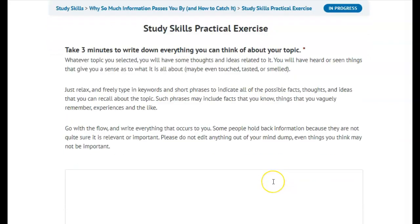So here's a practical exercise for you. Take three minutes to write down everything you can think of about your topic. Whatever topic you selected, you'll have some thoughts and ideas related to it. You will have heard or seen things that give you a sense as to what it's all about, maybe even touched, tasted, or smelled. Just relax and freely type in keywords and short phrases to indicate all the possible facts, thoughts, and ideas that you can recall about your topic. Such phrases may include facts that you know, things that you vaguely remember, or experiences and the like.